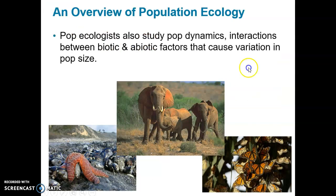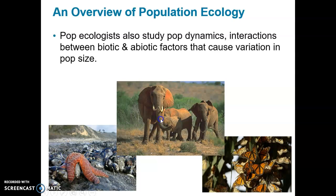Population ecologists studying population dynamics look at how populations change over time by examining interactions between biotic and abiotic factors. Biotic factors are living things that influence population numbers — for example, food that elephants eat or mussels that sea stars eat. Abiotic factors are non-living things that influence population numbers, such as the temperature of the water for a sea star.